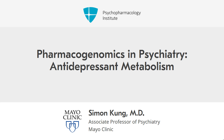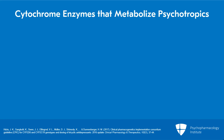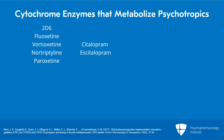Now I'll talk about how this is applied to our psychiatry medicines. I'm showing a table of the different medicines we use in psychiatry and what the enzymes are which metabolize those medicines. For example, fluoxetine, vortioxetine, nortriptyline, and paroxetine are classically metabolized by 2D6. Citalopram, escitalopram, and sertraline are 2C19.